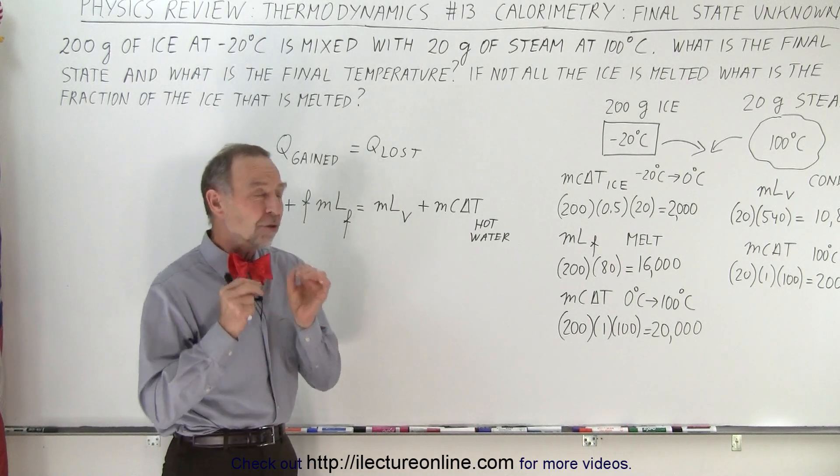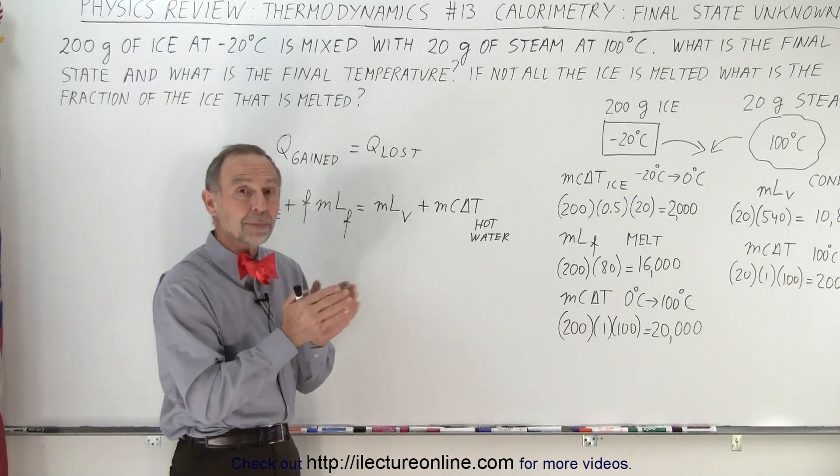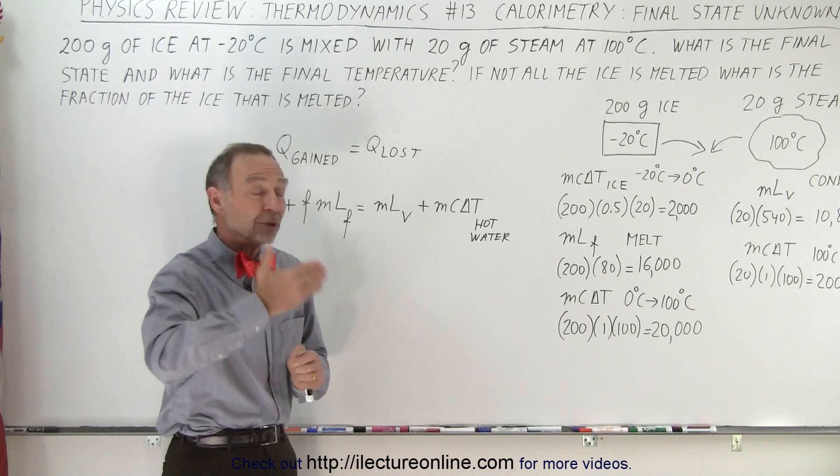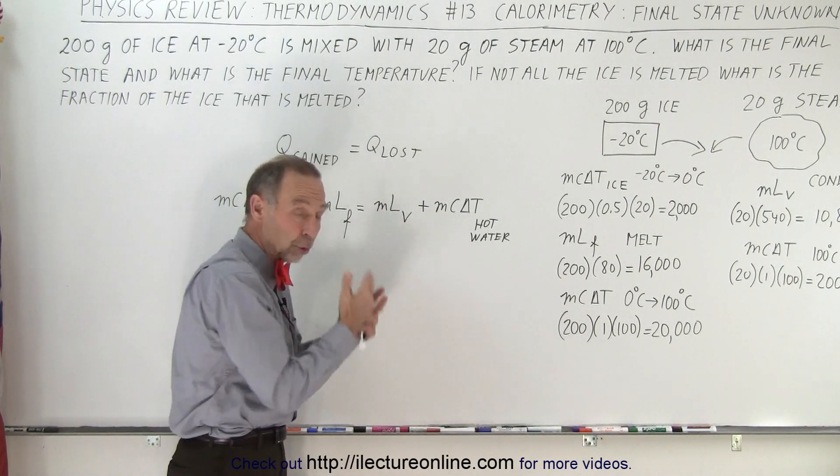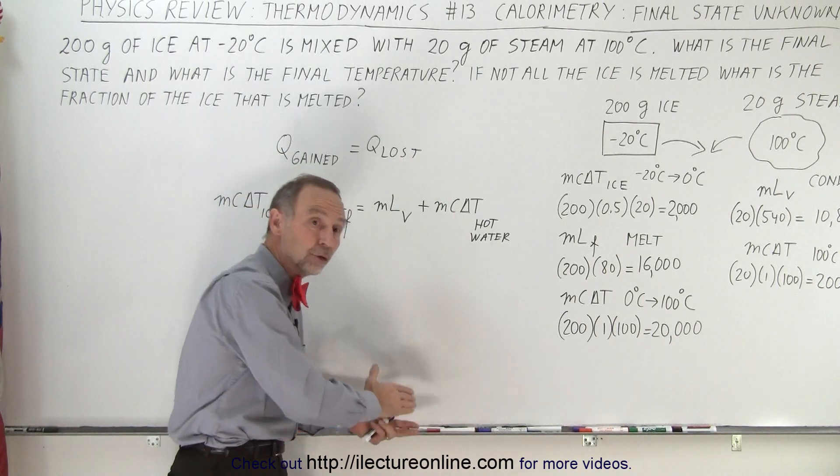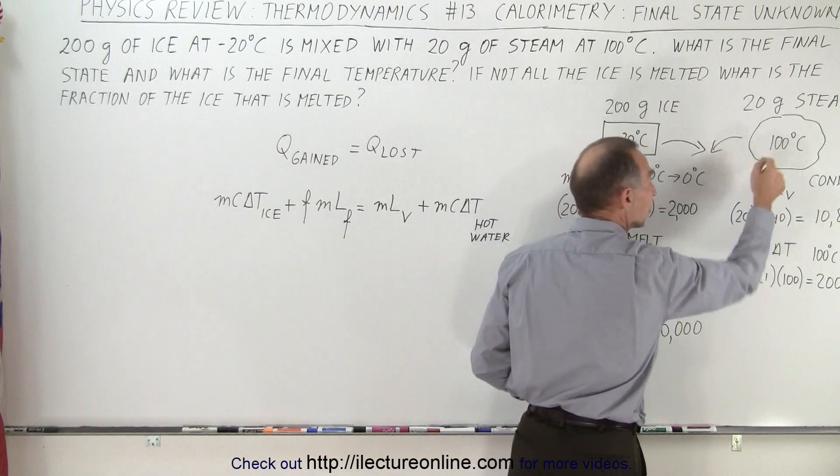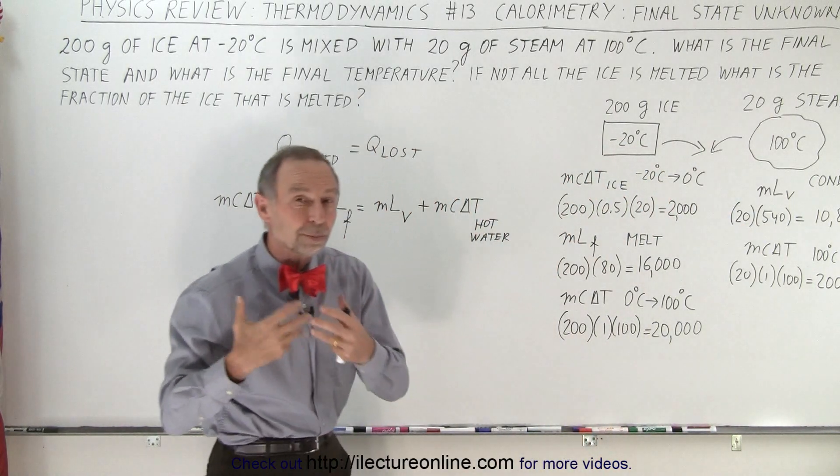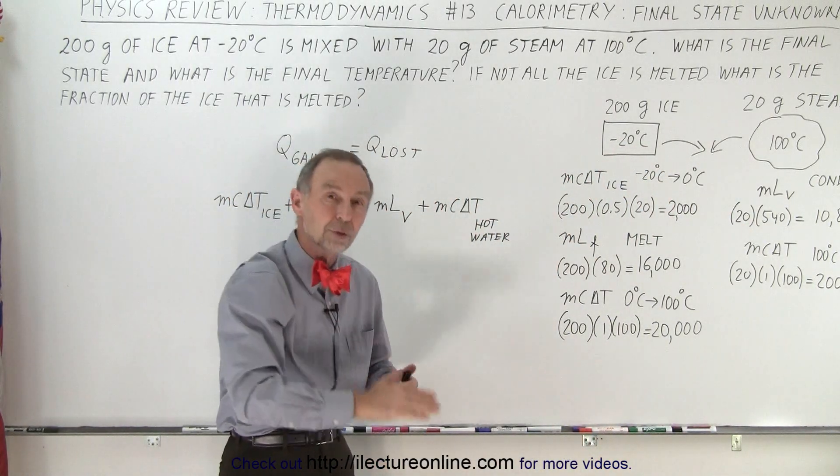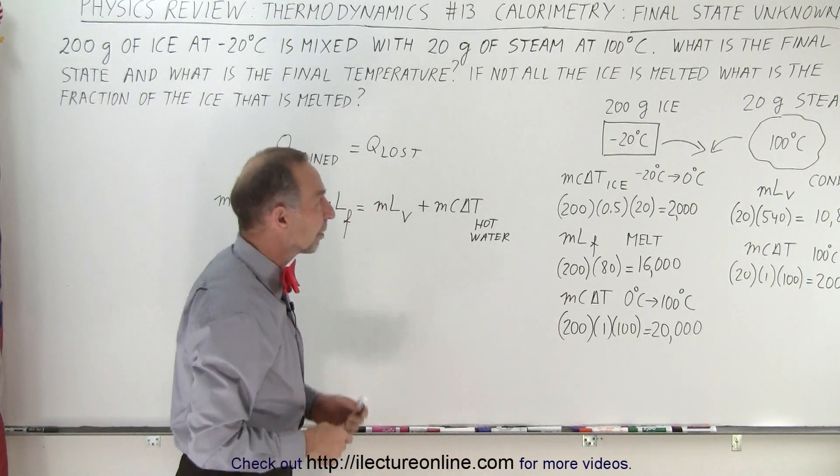And so the best thing to do is to take each component separately and see how much heat it would take to go taking the cold object to go from where it is to the boiling point of water. And then we take the hot item, the steam here, and how much heat would be released to get it all the way down to 0 degrees Celsius.